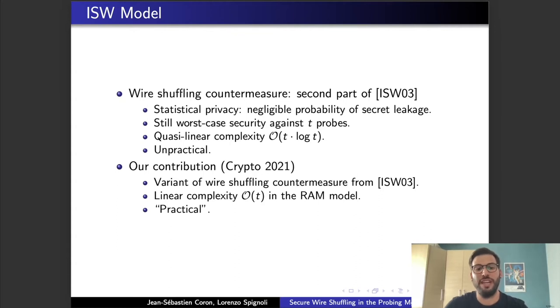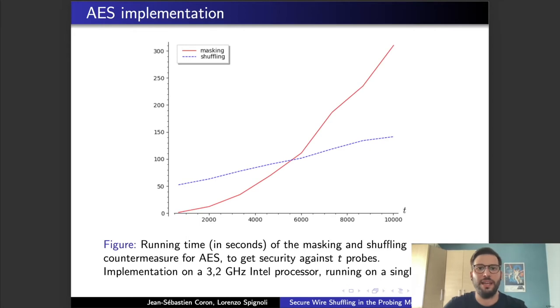Our contribution will be a proposed variant of wire shuffling countermeasure from ISW03, which will achieve linear complexity in the RAM model. We also provided an implementation of it, and as you can see from the figure, our shuffling countermeasures on long range will work much better than the classical masking, with a crossing point around 6000 probes.